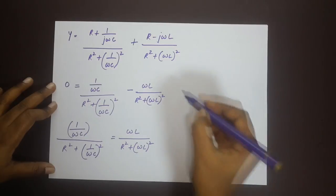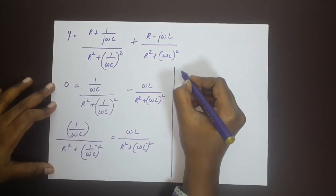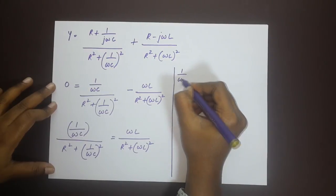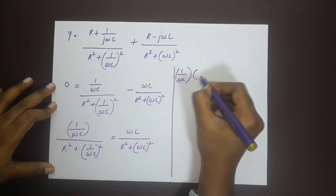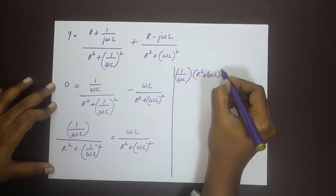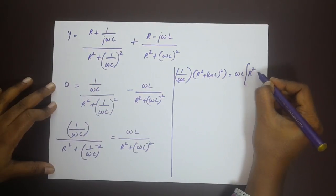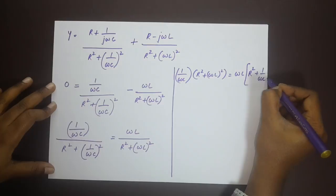We cross multiply. Let me write that down over here. We cross multiply to get 1 by ωc into R square plus ωL whole square is equal to ωL into R square plus 1 by ωc whole square.